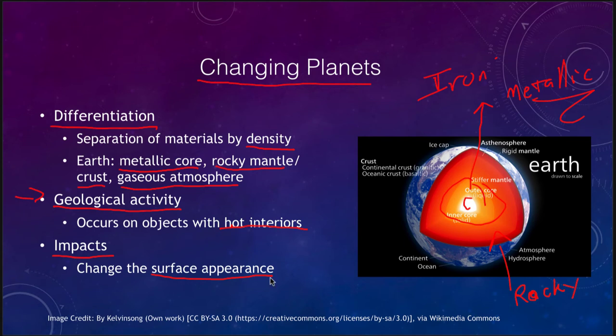Impacts can also change an entire planet. Large, massive impacts can essentially shatter a large object, and perhaps the reason we have a large moon is because of a massive impact billions of years ago.